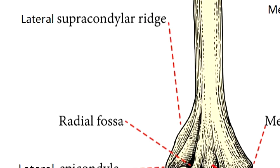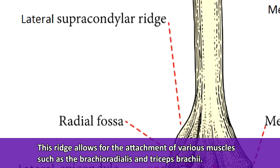On the other side, we have the lateral supracondylar ridge, pictured in the anterior view. Lateral means at the side or toward the side of the body. This ridge allows for the attachment of various muscles such as the brachioradialis and the triceps brachii.